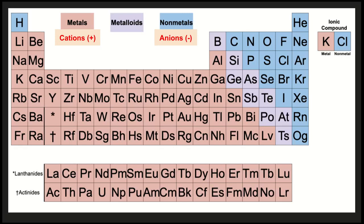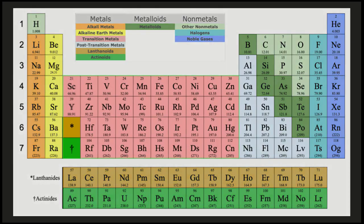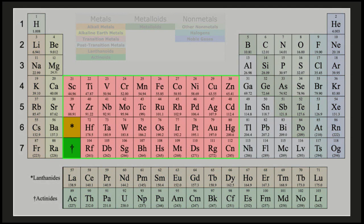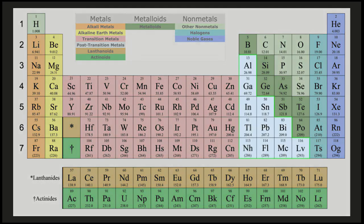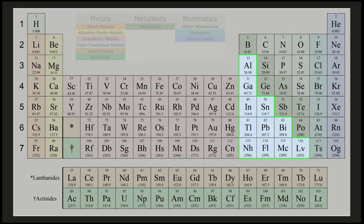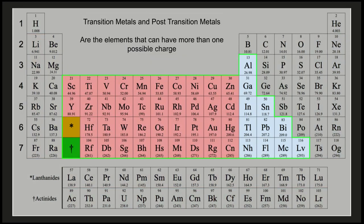When we talk about our elements that have more than one possible charge, we're actually talking about a subsection of the metals. We're looking at the transition metals and the post-transition metals. These two areas on the periodic table are where we find the elements that have more than one possible charge.